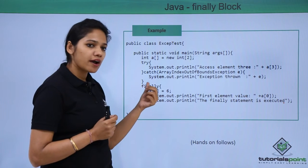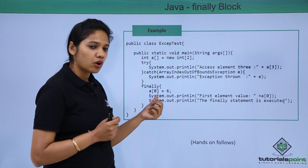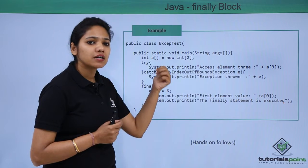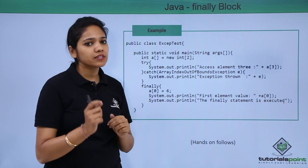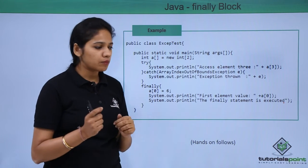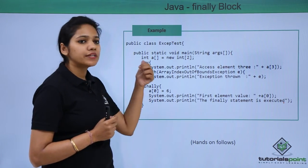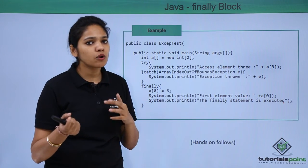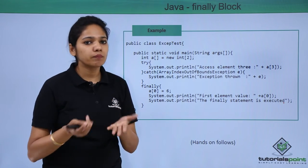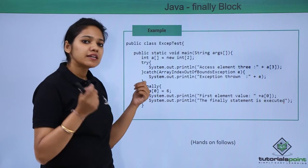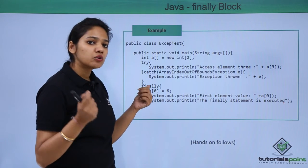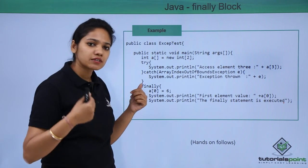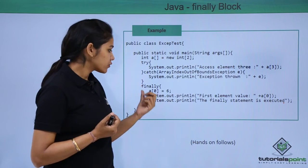You can also use printStackTrace to print detailed information about the exception. Immediately following that, you have a finally block. Whether an exception occurs or not, we will execute this finally block. Every finally block needs at least one try block — whether you have a catch block or not makes no difference, but a finally block requires a try block to exist.